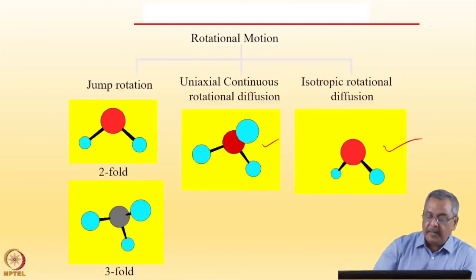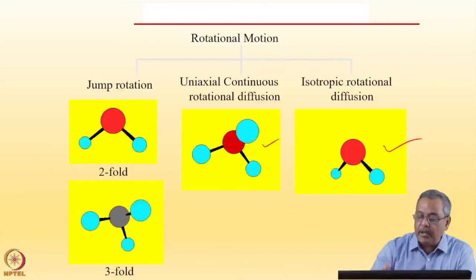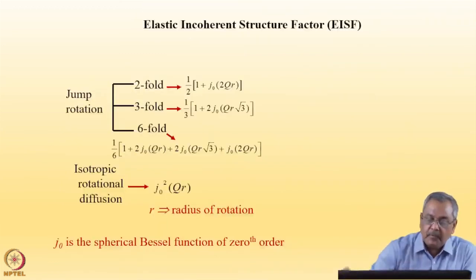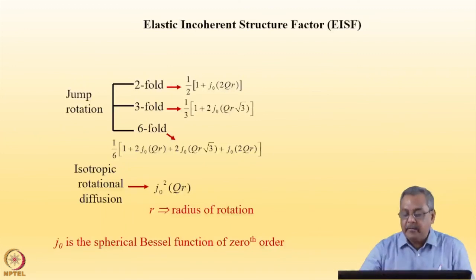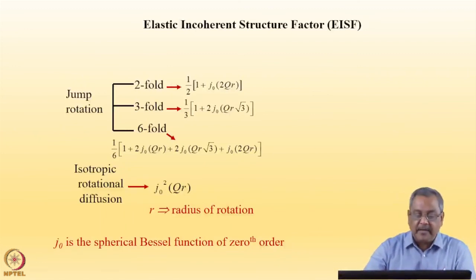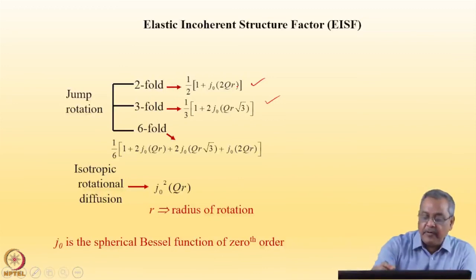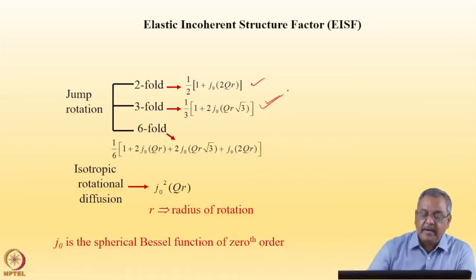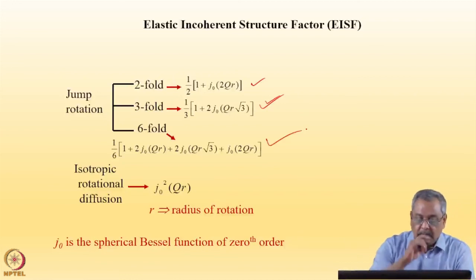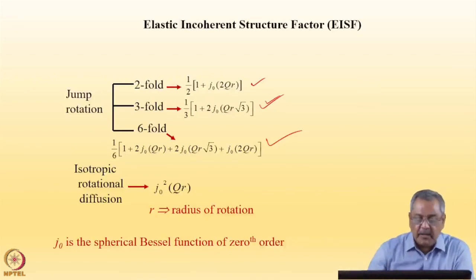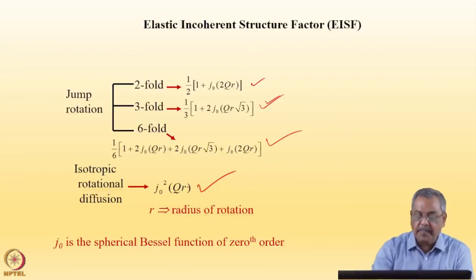The EISF expressions are: for two-fold jump rotation — the expression derived earlier; for three-fold — extended to three terms; for six-fold — further extended; and for isotropic rotational diffusion it is j₀²(qR), where R is the radius of rotation and j₀ is the zeroth-order spherical Bessel function.